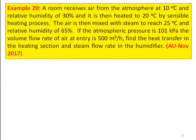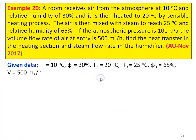Example number 20, from November 2017 question paper: A room receives air from the atmosphere at 10 degree Celsius and relative humidity 30 percent, and it is then heated to 20 degree Celsius by a sensible heating process. The air is then mixed with steam to reach 25 degree Celsius and relative humidity 65 percent. If the atmospheric pressure is 101 kilo Pascal and the volume flow rate of air at entry is 500 meter cube per hour, find the heat transfer in the heating section and the steam flow rate in the humidifier.